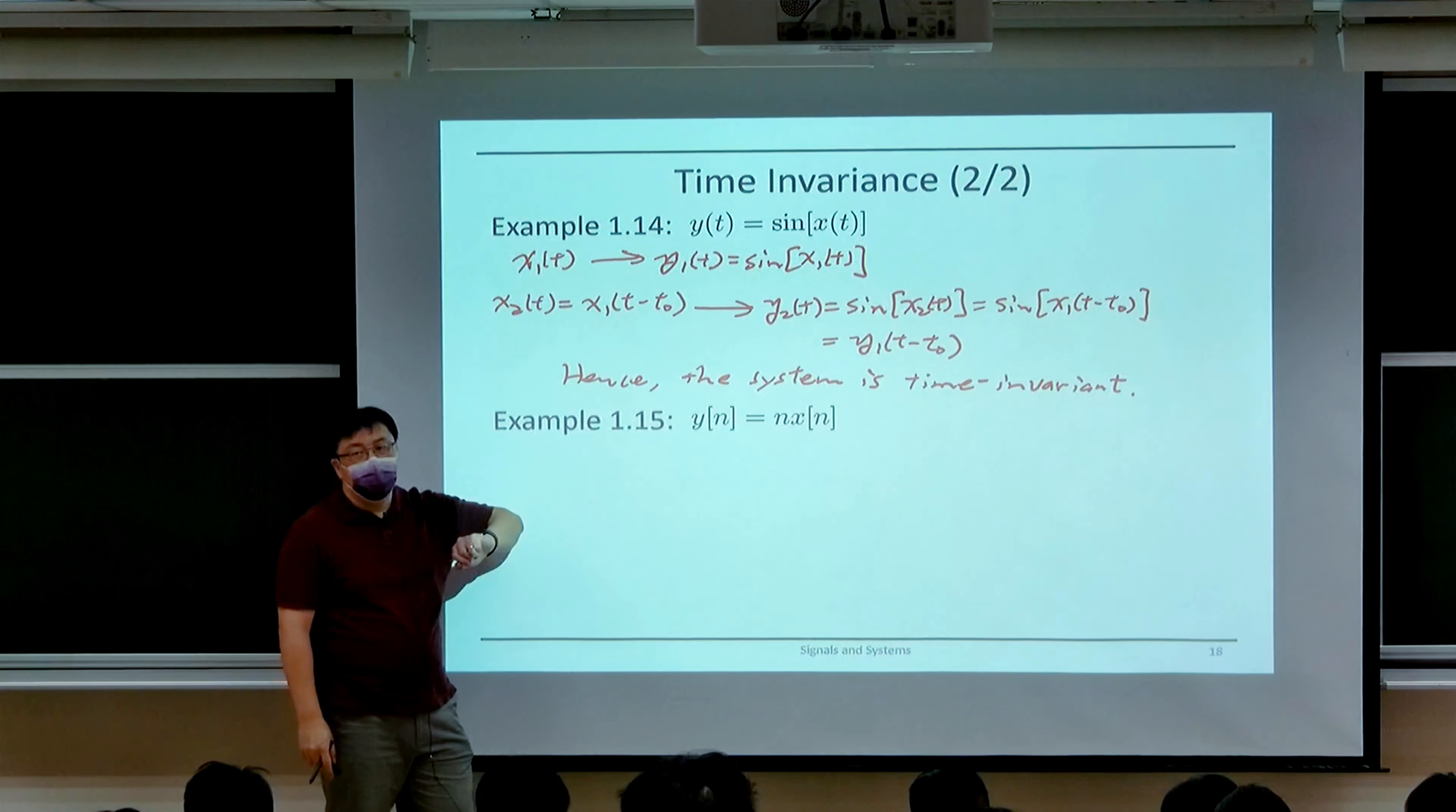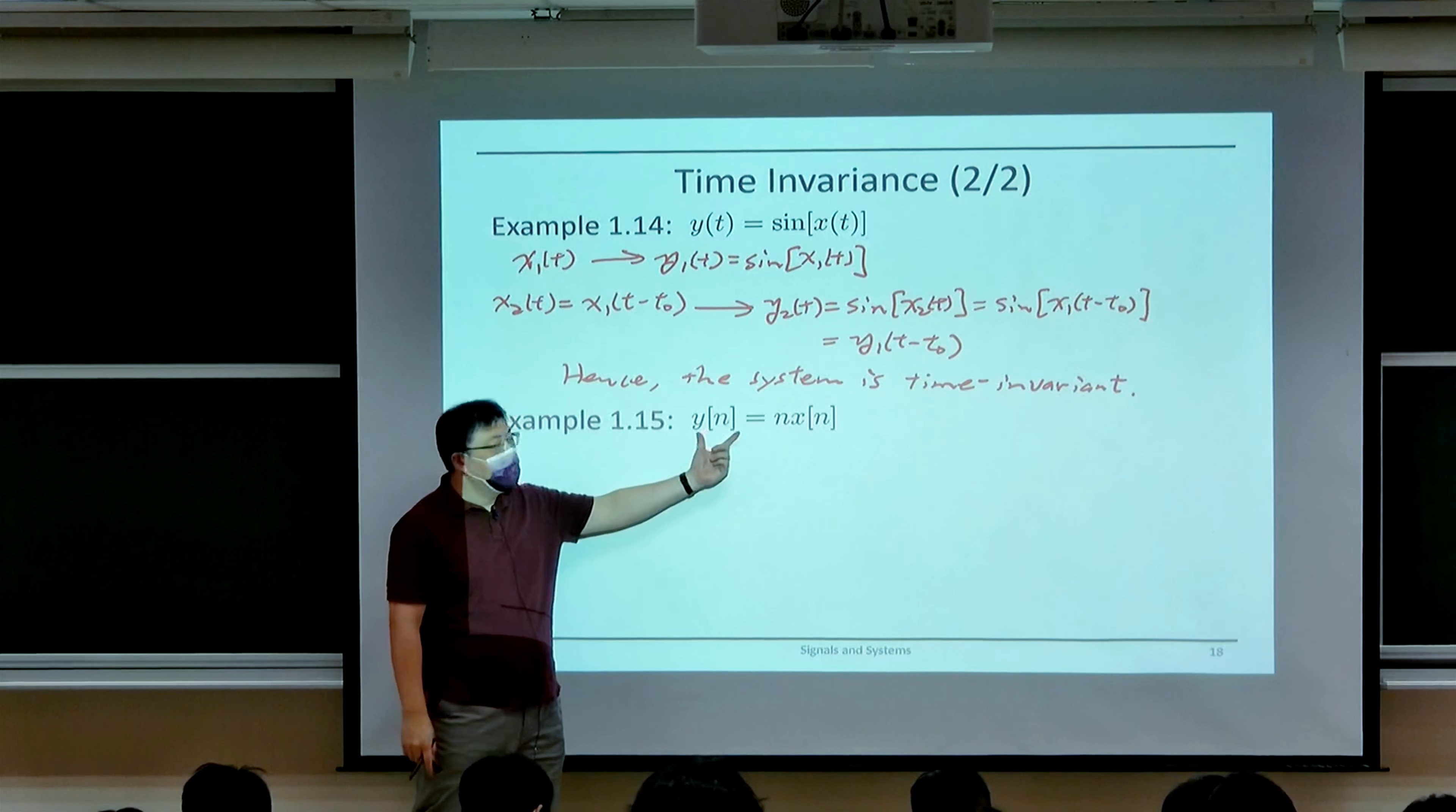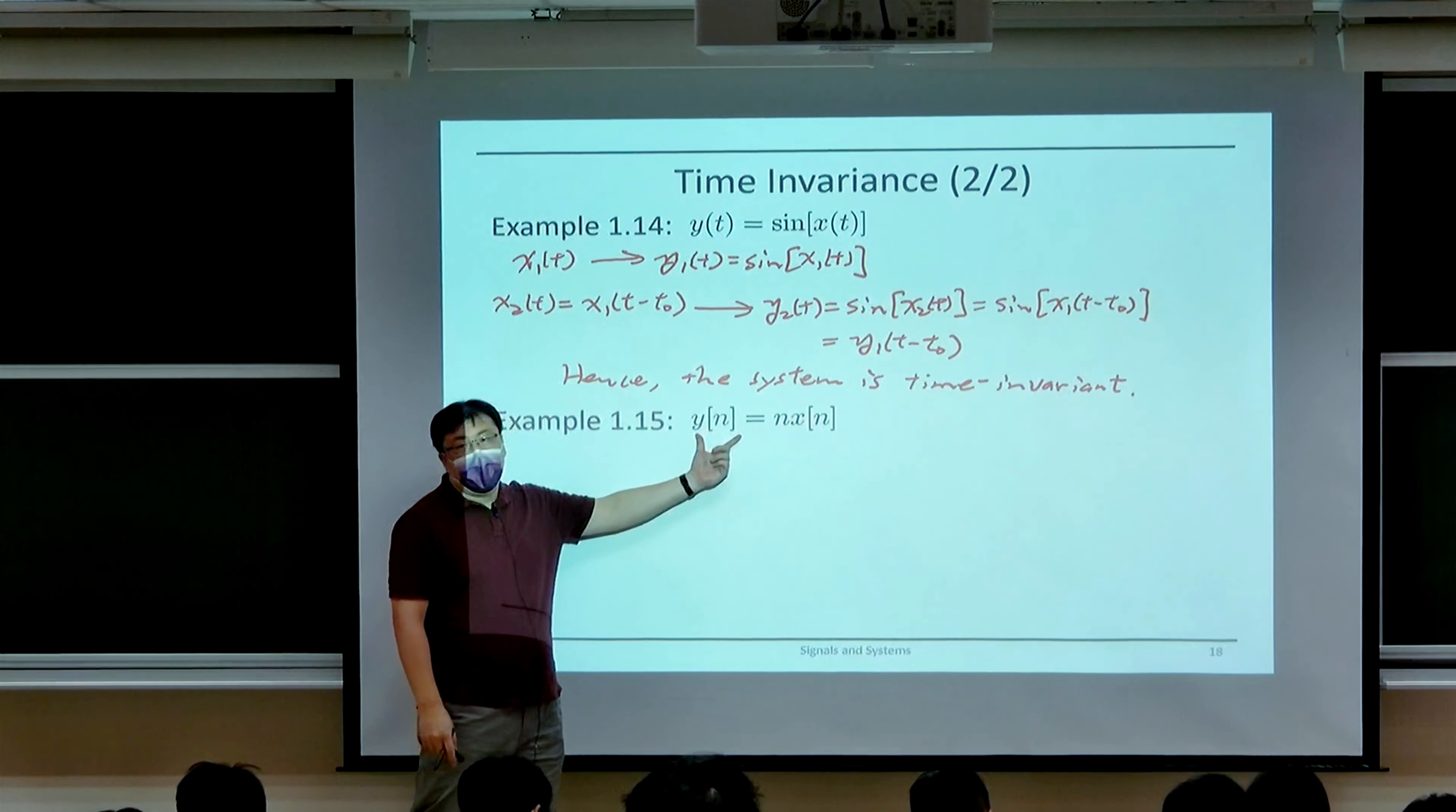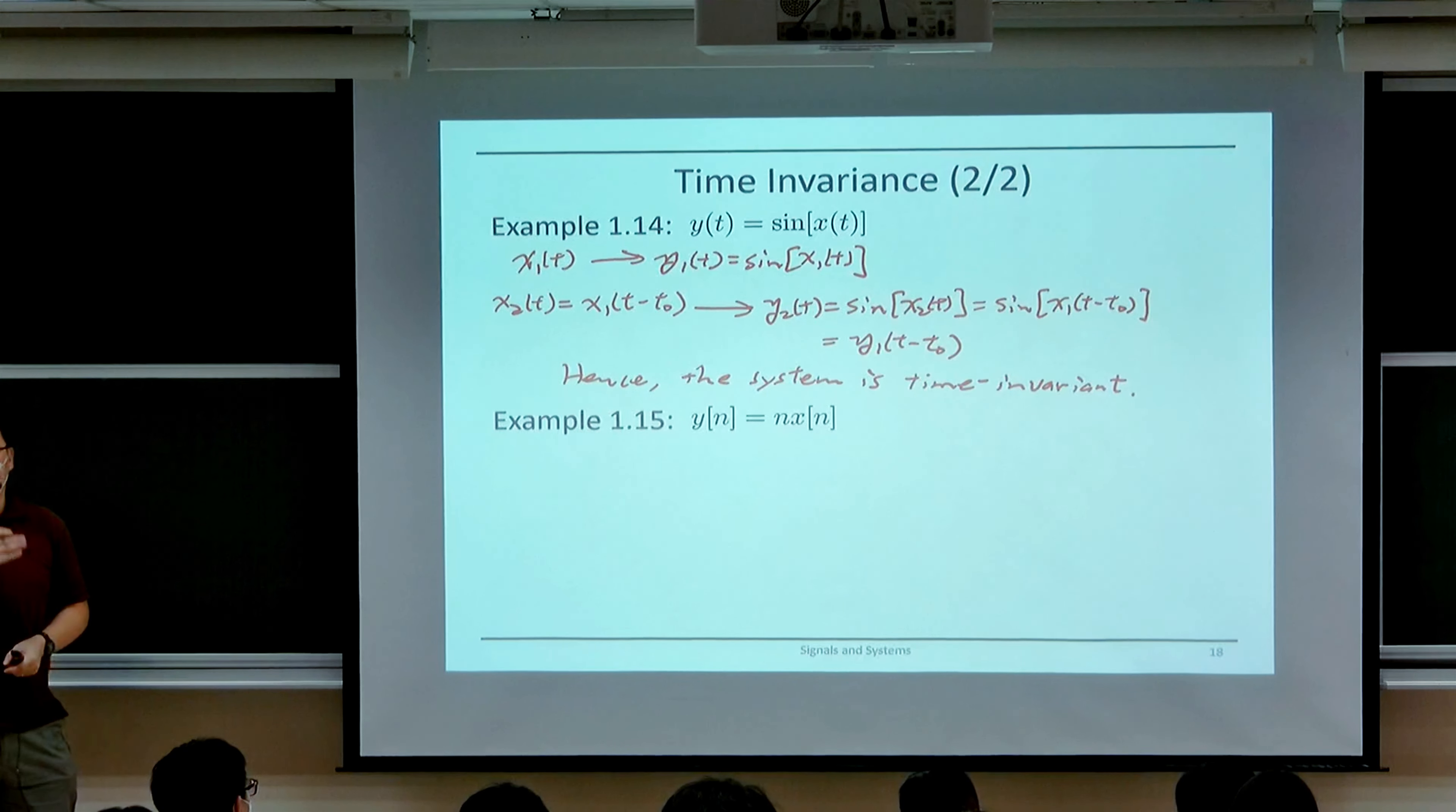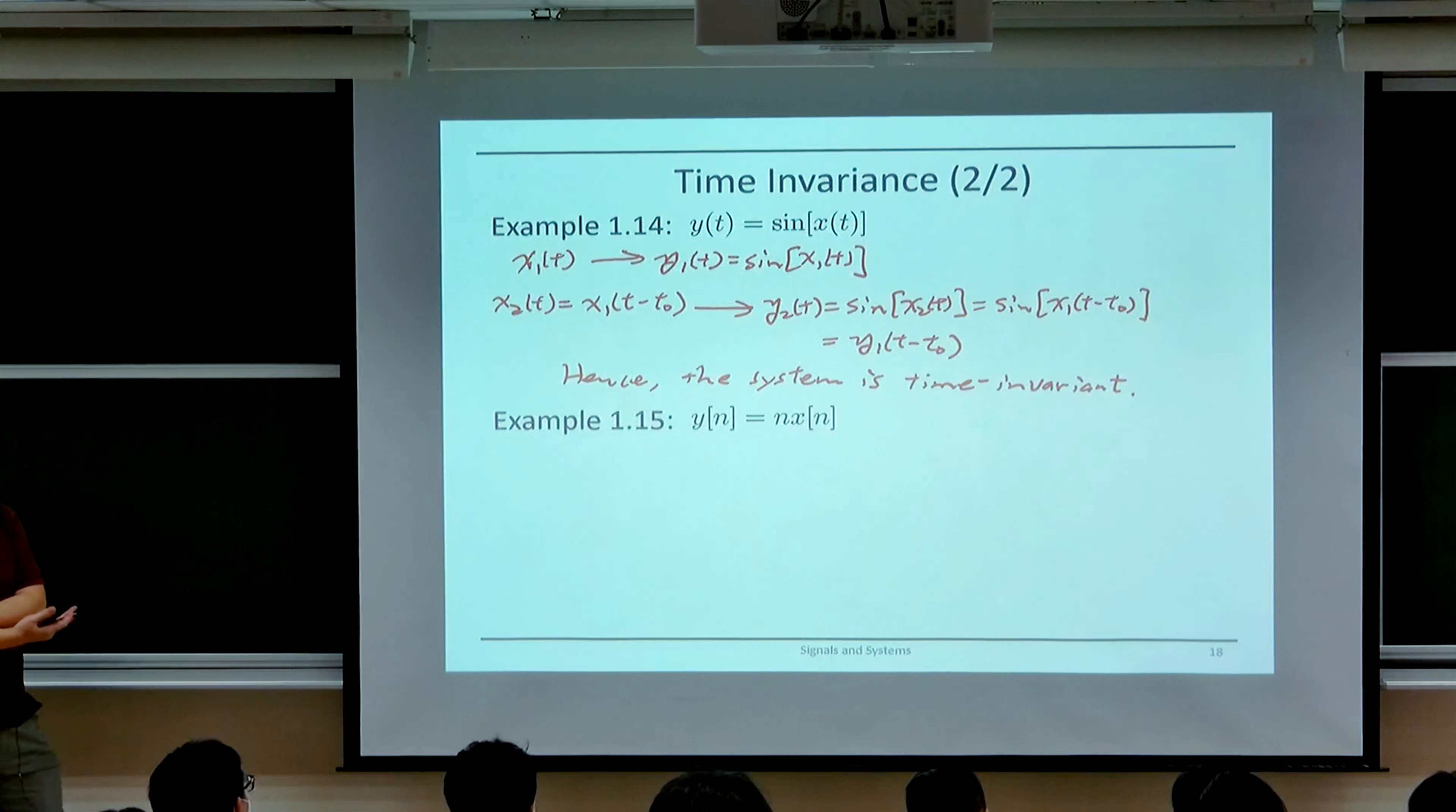Now, in the second example, we have output y[n] that is equal to n times the input x[n]. Now, is this system time invariant or time varying?